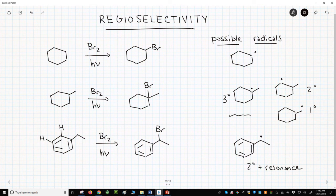Is it possible to brominate these positions instead by going through a radical on the ring?